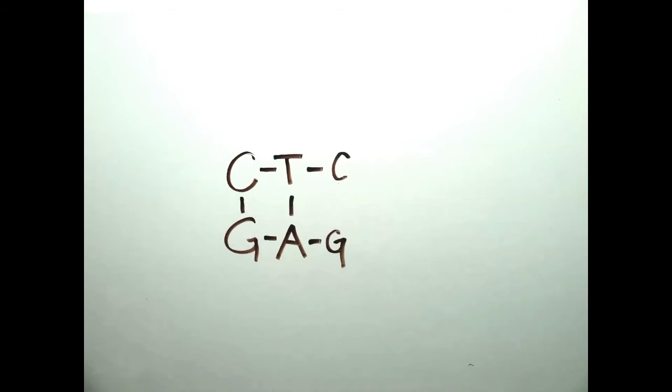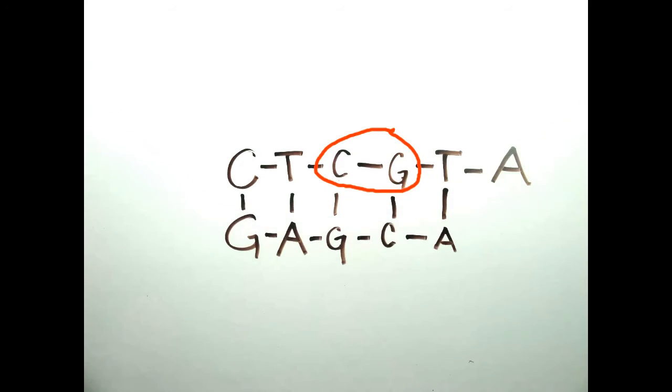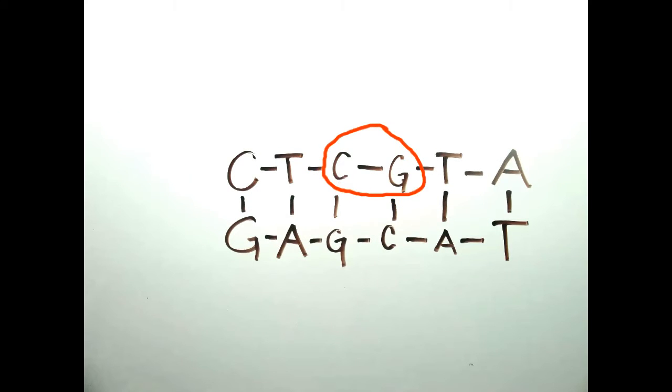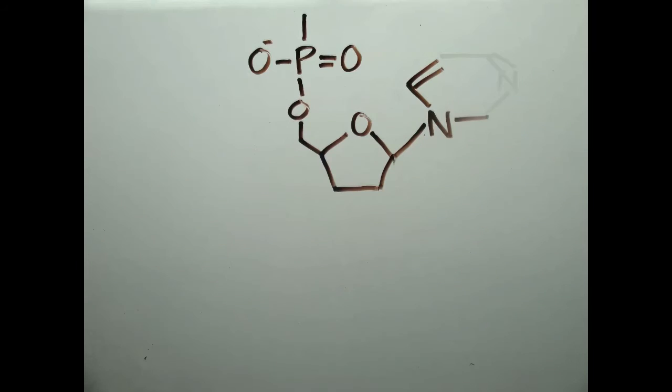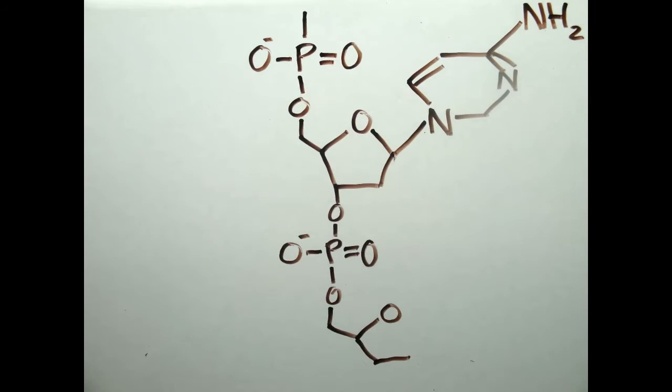Methylation in animals happens specifically on the cytosine of CpG dinucleotides, circled red here. These are dinucleotides where a cytosine is followed by a guanine linearly in the 5' to 3' direction, with only a phosphate between them.